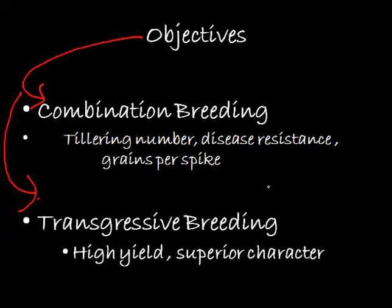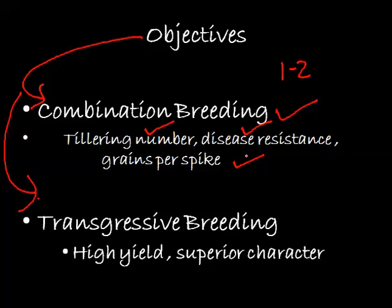The main aim of combination breeding is to transfer one or more characters into a single variety. A plant may have certain desirable characters that need to be transferred to a certain progeny. For example, to create a disease-resistant plant, one parent with disease-resistant genes is crossed so those genes transfer to the progeny. Yield is not necessarily increased — most of the time yield may not be affected or may be less than either parent individually.